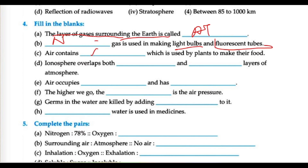Air contains carbon dioxide, which is used by plants to make food. The ionosphere overlaps two layers: one is the exosphere and the other is the thermosphere. Air occupies space and has mass, meaning weight.